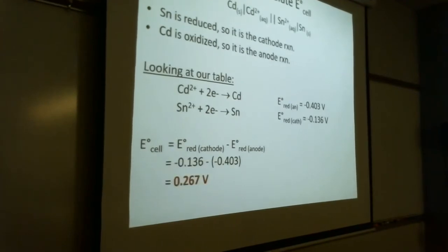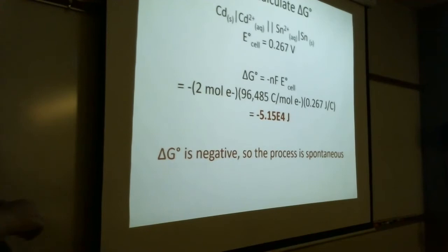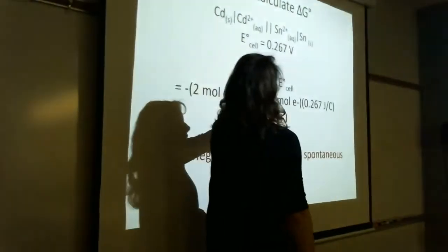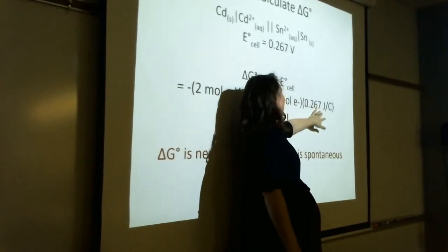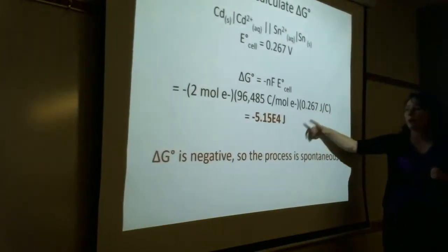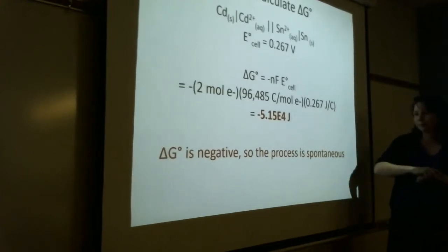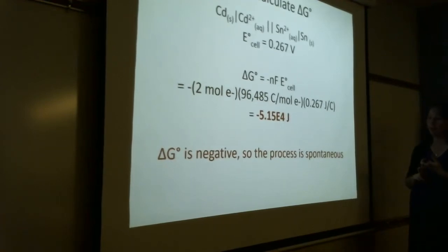Let's calculate delta G to confirm. Delta G = -nFE°cell. Remember a volt equals a joule per coulomb — that's how we make the substitution and the coulombs cancel, leaving units of joules. Dividing by a thousand converts to kilojoules. We get a negative delta G and a positive E-cell, so yes — both confirm this is a spontaneous reaction under standard conditions: 25°C and one molar concentration.